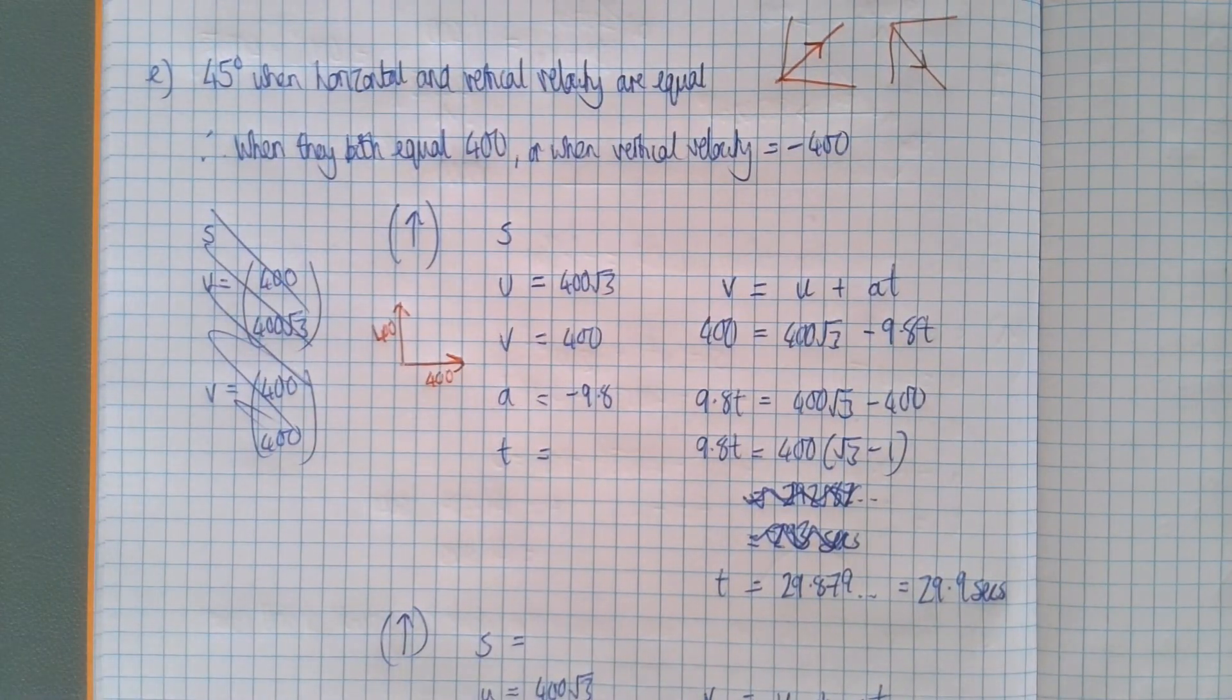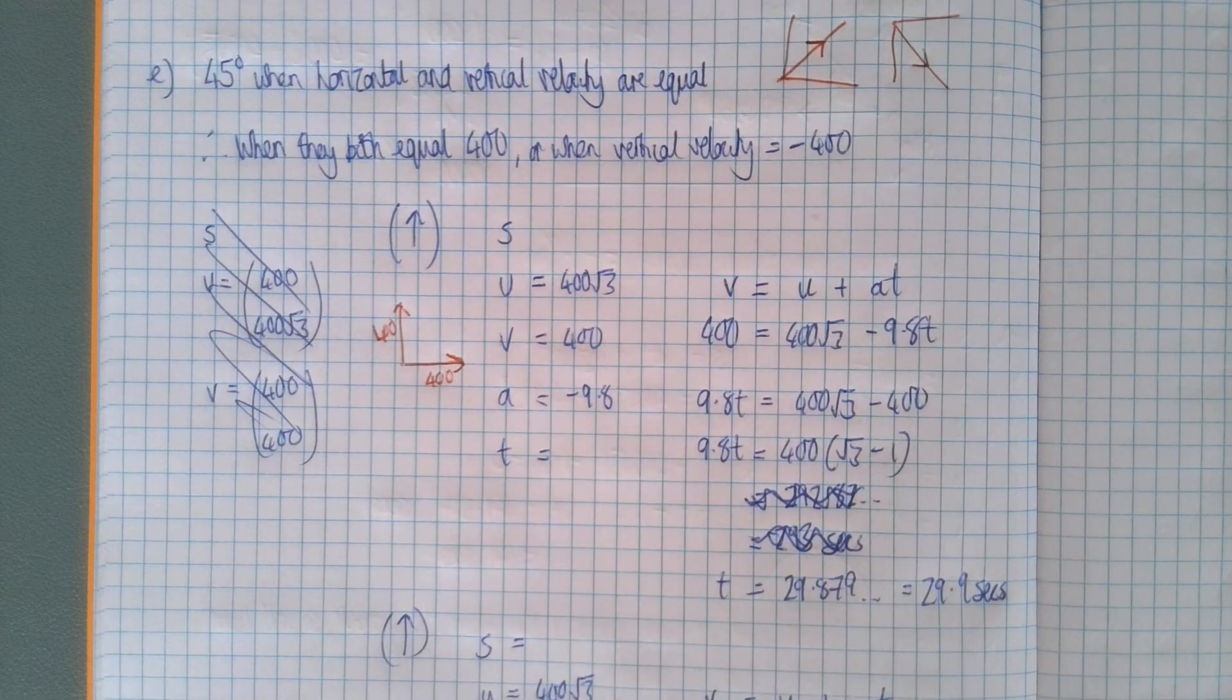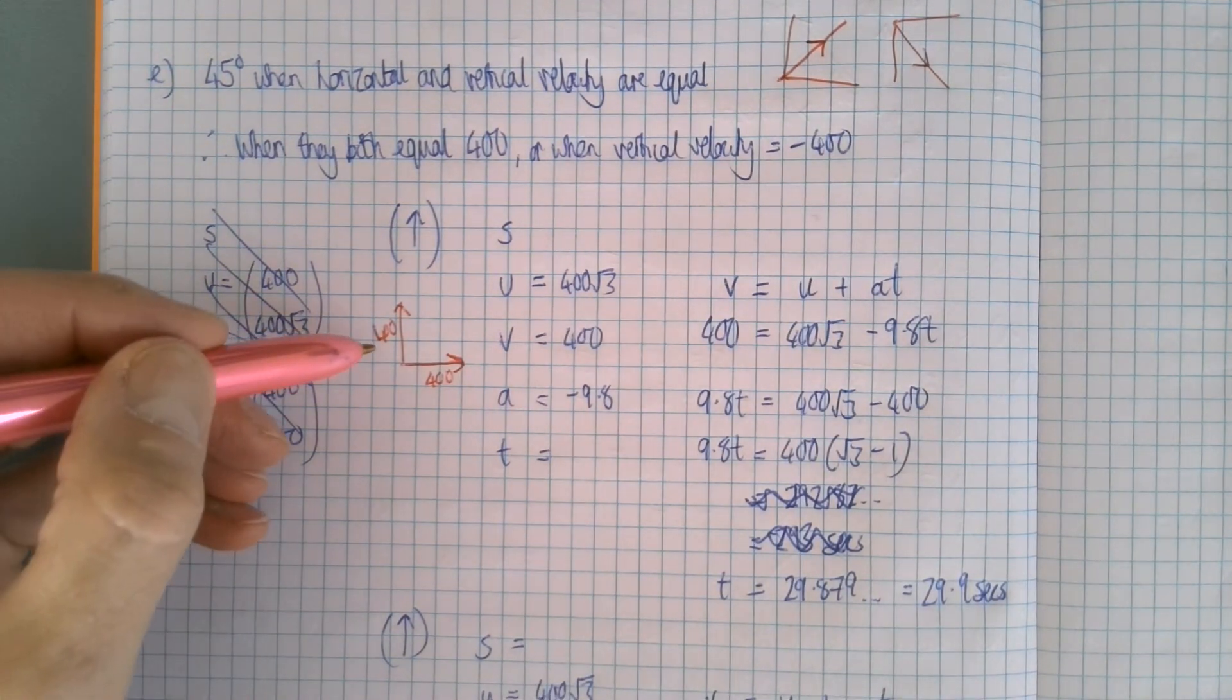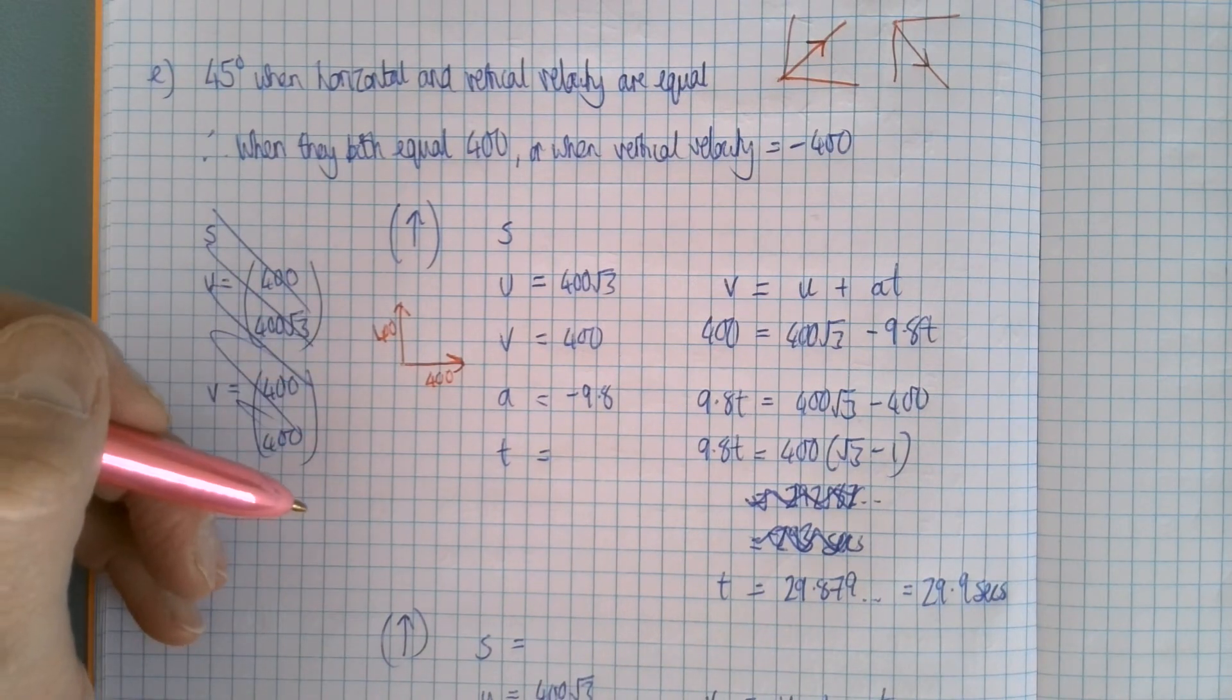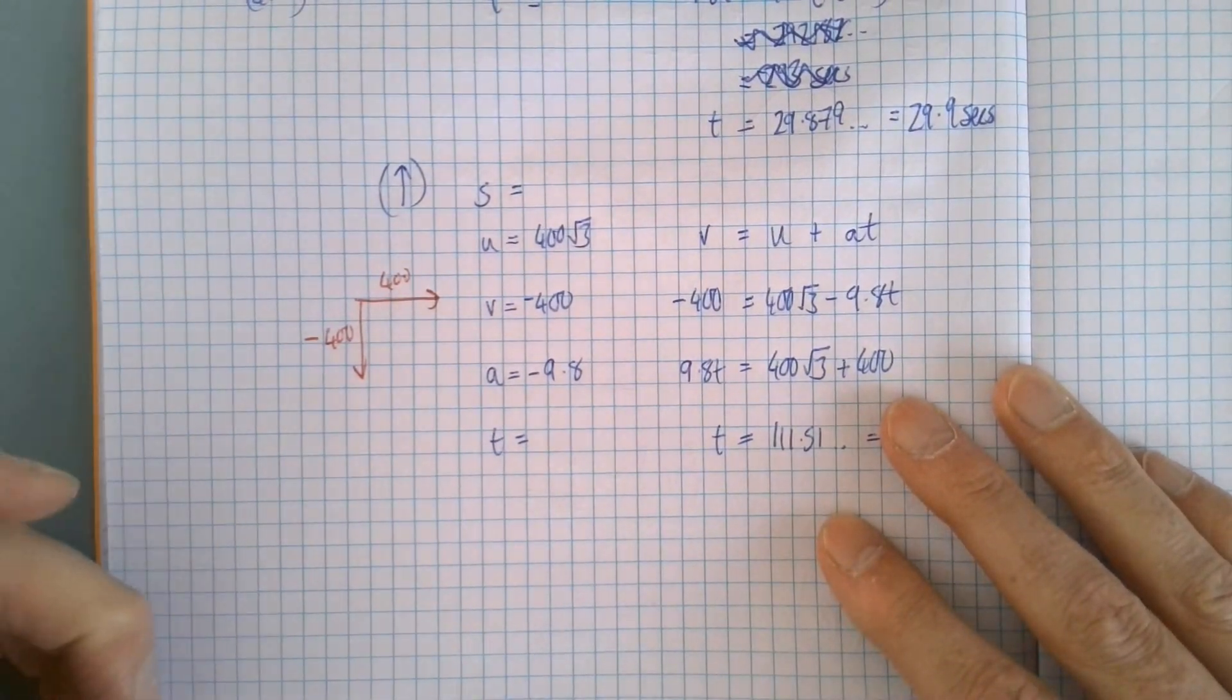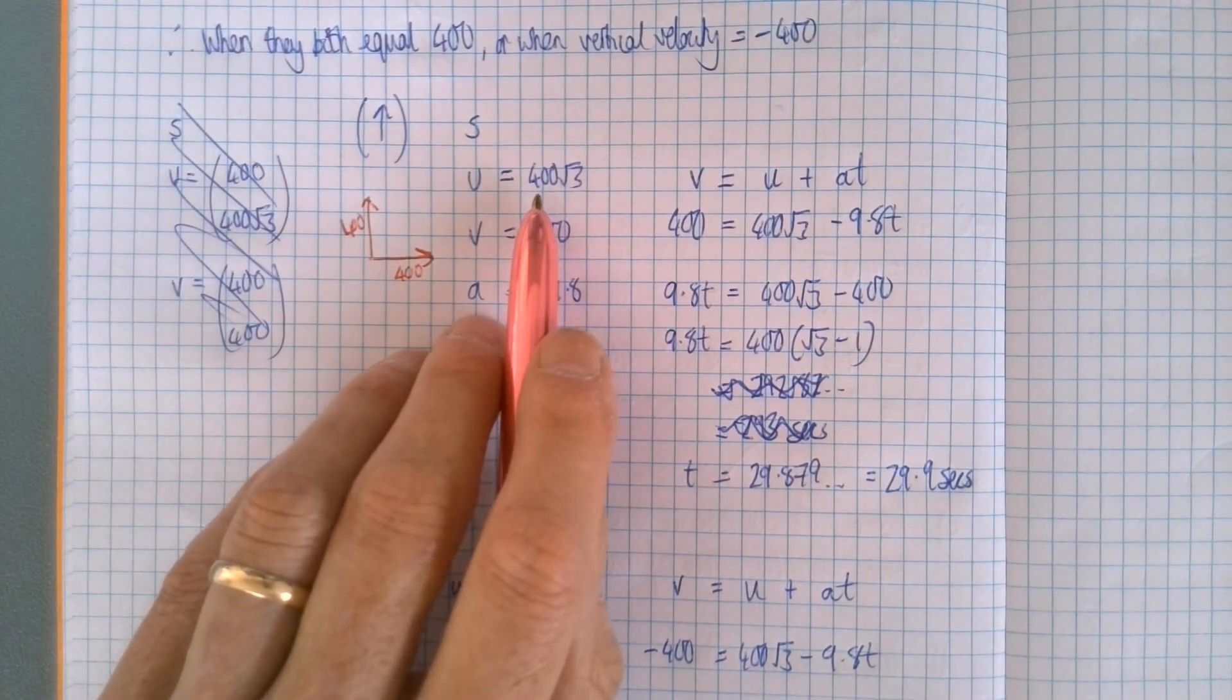Now we know that the horizontal component will always be 400 because there's no acceleration horizontally. So I just had to work out when was the vertical speed 400 and when was it minus 400. So again just working vertically, no need for vectors. The initial vertical speed is 400 root 3.